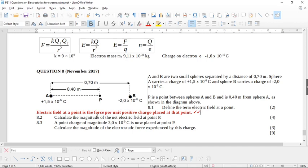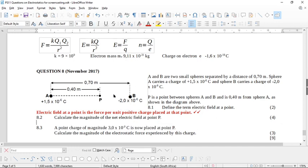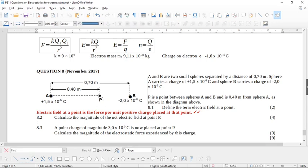Now it says calculate the magnitude of the net electrical field at P. So electrical field is where the positive charge will go. We show the direction. So before we go anywhere, let's see what would happen if you placed something positive at P.